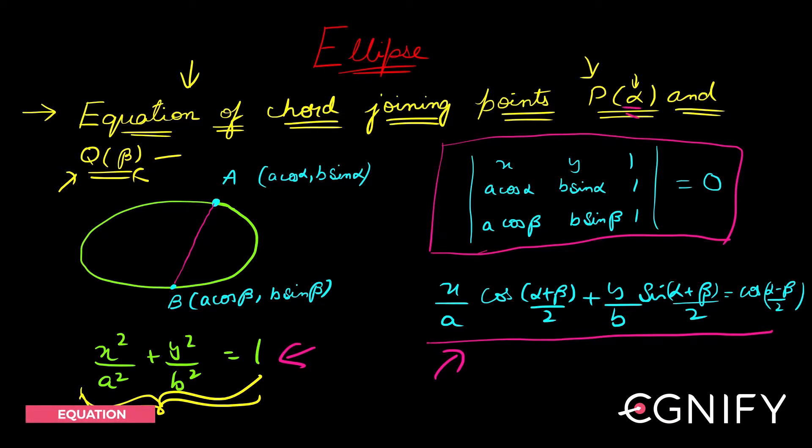So what do you mean by eccentric angle alpha? It means that your point - in fact I can change this to A and B instead of P and Q - so point A is (a cos α, b sin α) because the eccentric angle is alpha. And capital B is (a cos β, b sin β) because the eccentric angle is beta.